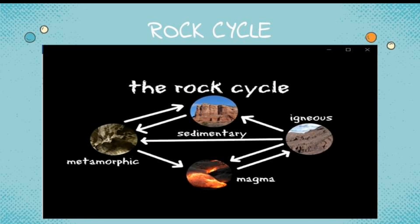If rocks are buried ever deeper, they may melt and form magma, starting the cycle over again. Of course, sedimentary and metamorphic rocks can be eroded into sediment, and igneous rock can become metamorphic rock or lava — but one way or another, rocks all over the world keep changing from one form to the next. I hope you've learned a lot from this video, thank you!